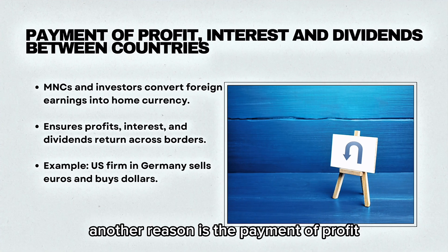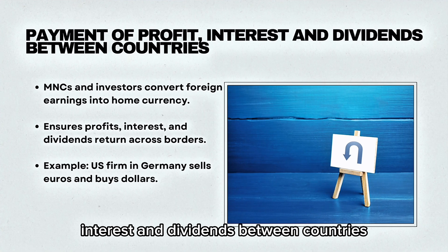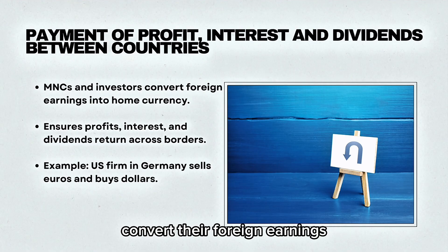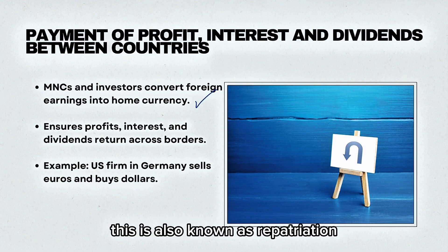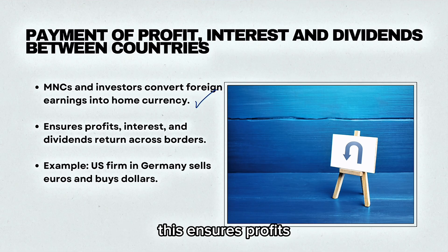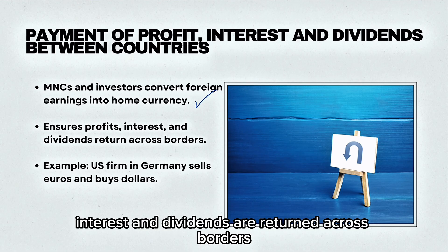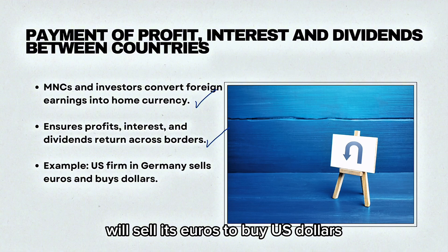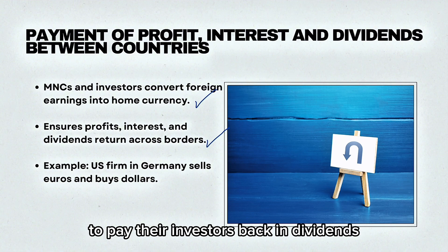Another reason is the payment of profit, interest and dividends between countries. Multinational companies and investors convert their foreign earnings into their home currency — this is also known as repatriation. This ensures profits, interest and dividends are returned across borders. For example, a US firm in Germany will sell its euros to buy US dollars to pay their investors back in dividends.